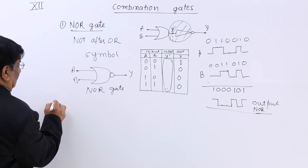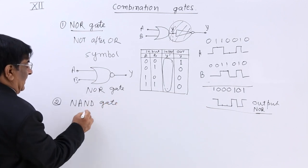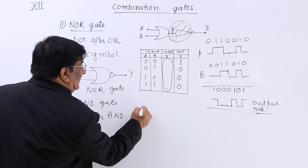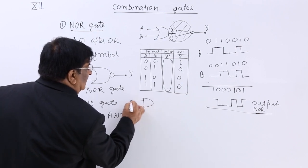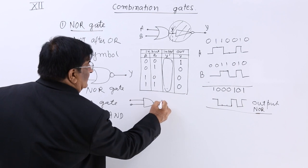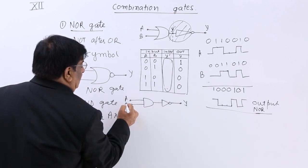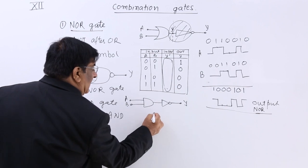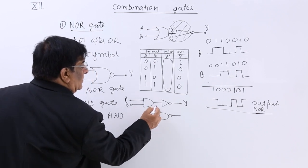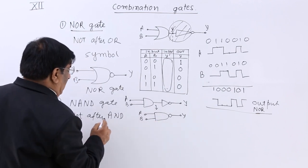Now next we look at the NAND gate. The name makes it very clear — NOT after AND. So first we make an AND gate, and after that there is a NOT gate. This gives the final output. We make a shortcut symbol for it — input A and B, and this is output Y. This is the NAND gate.